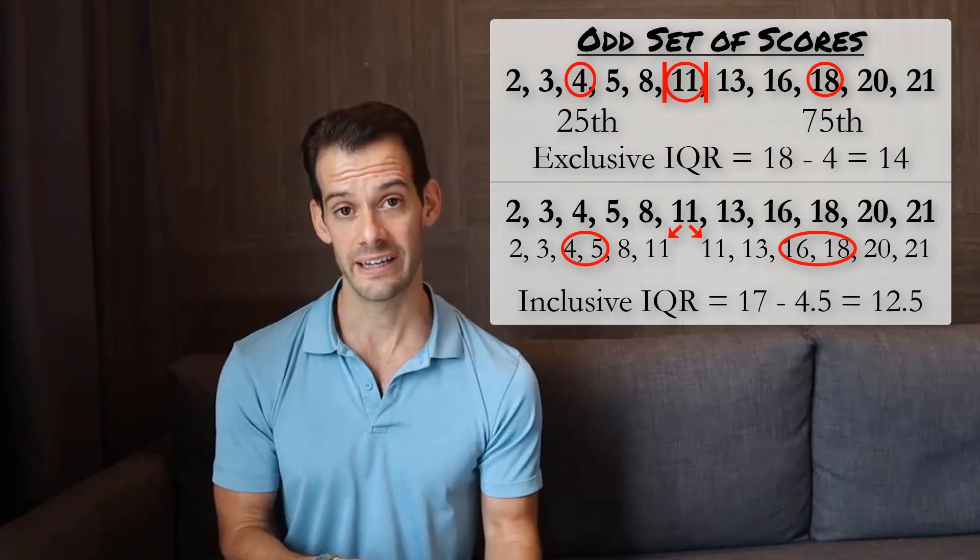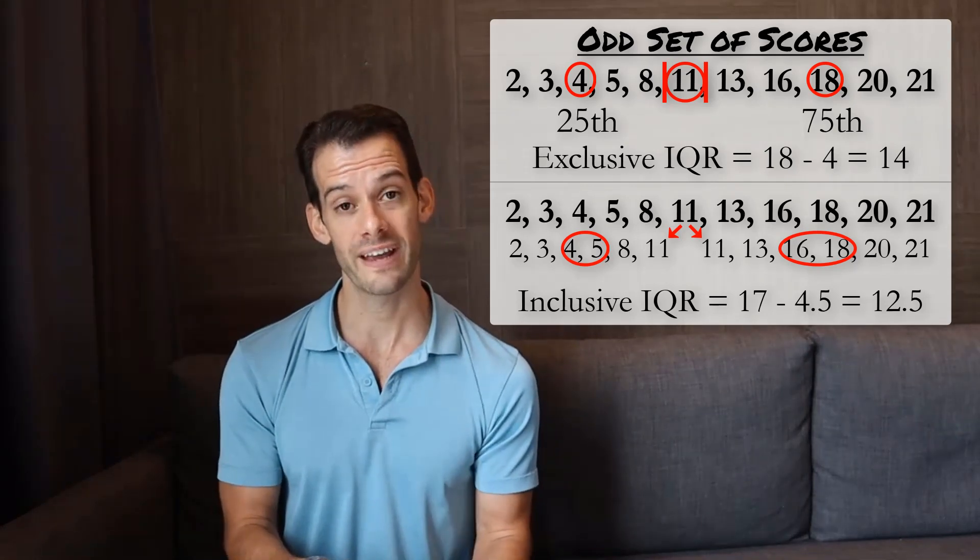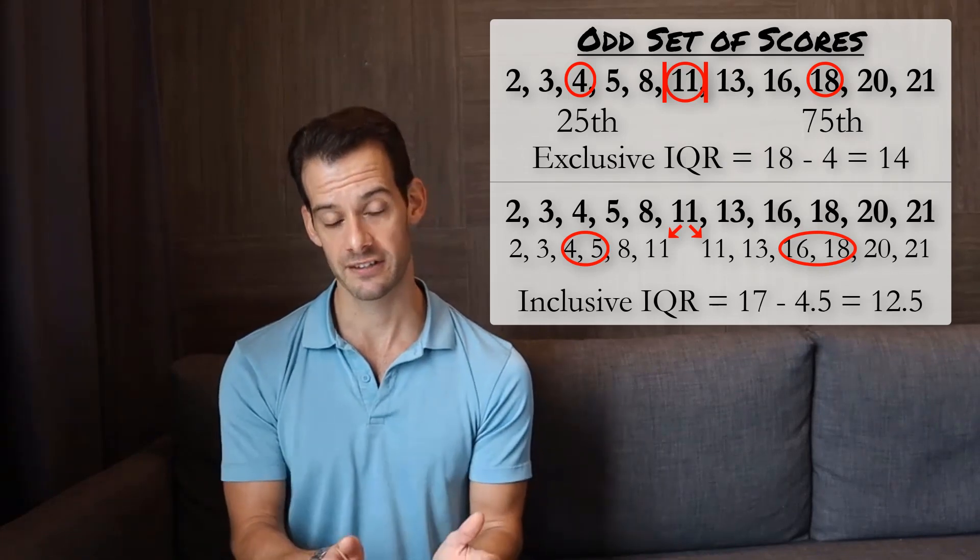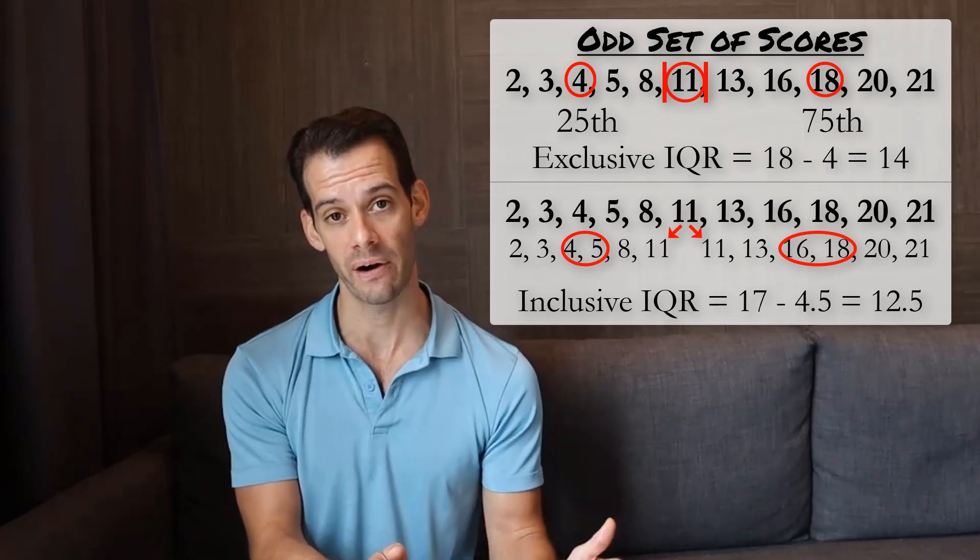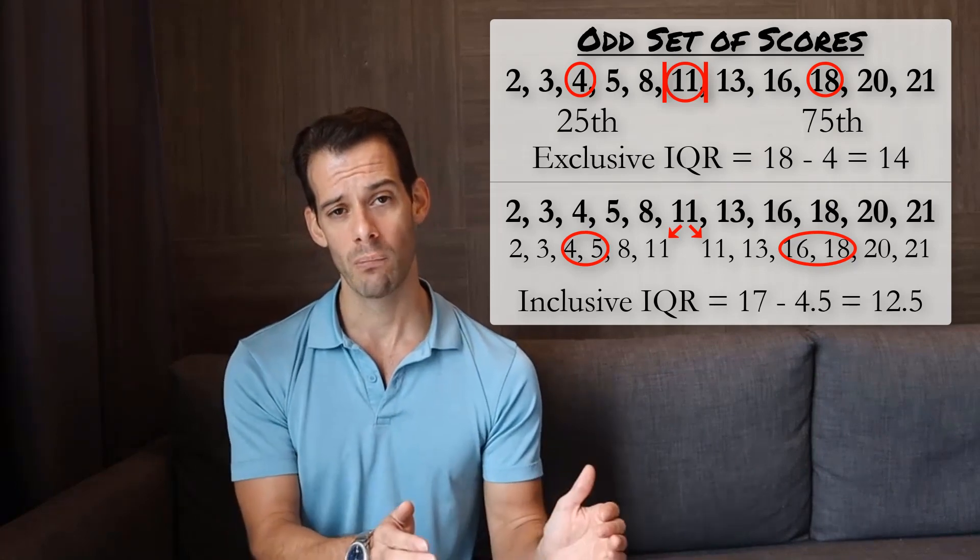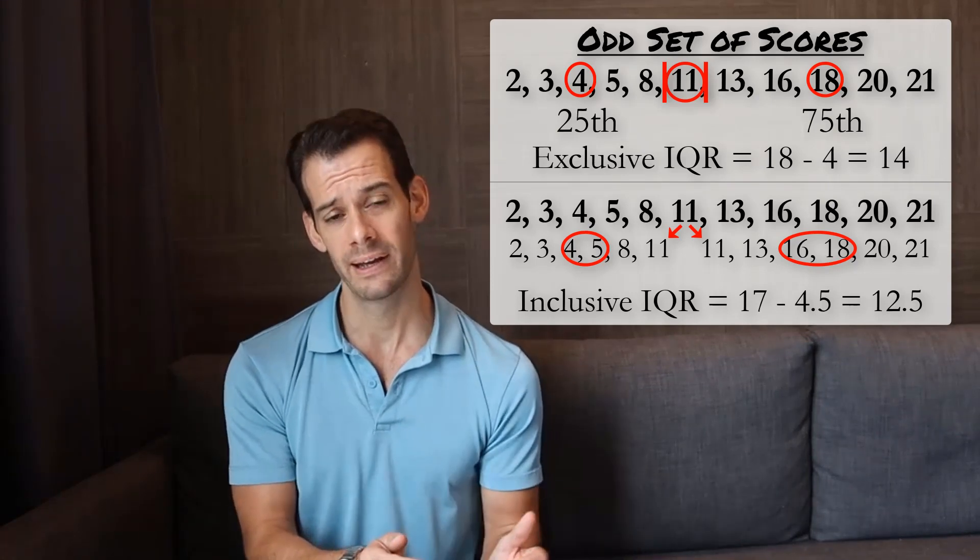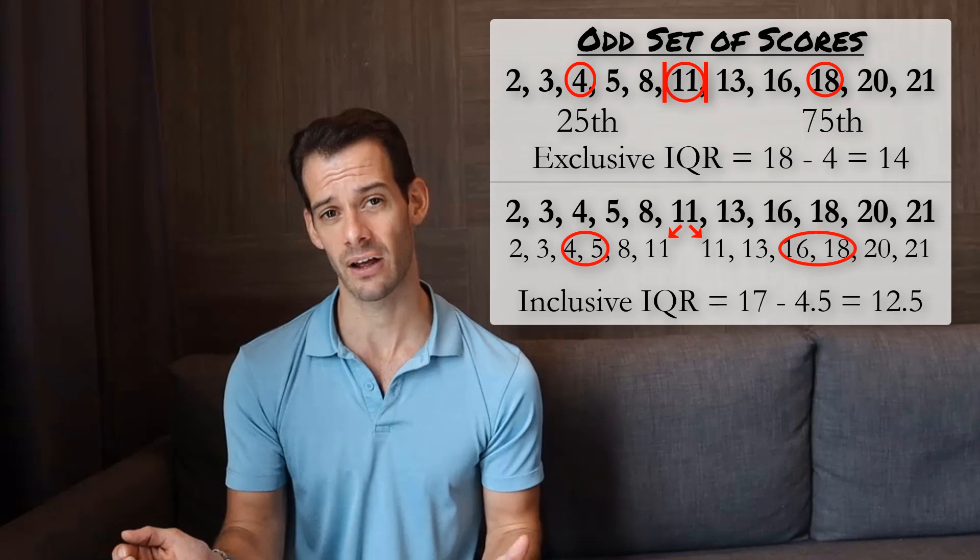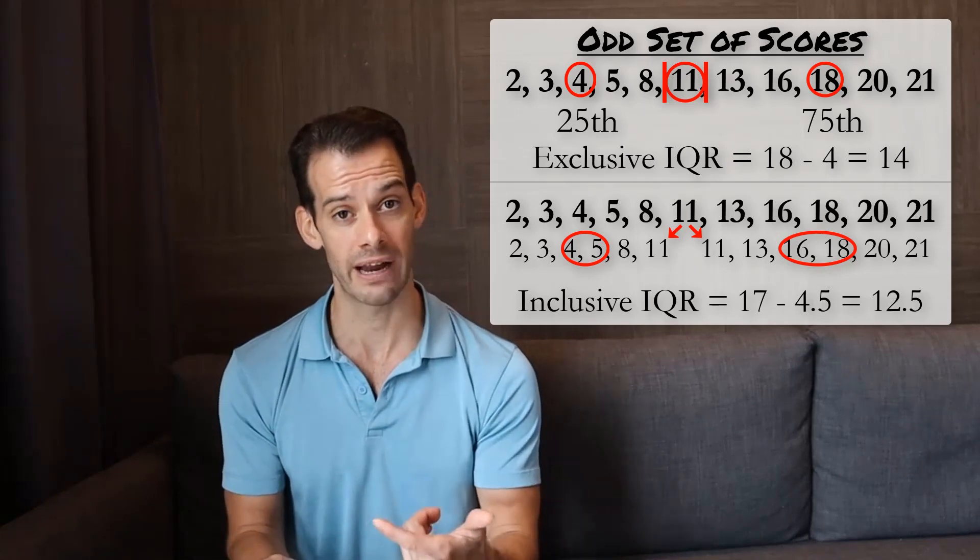As we can now see, if we use this inclusive method we'll tend to get a slightly smaller interquartile range. This is because by including the median as part of the lower and upper halves, we're moving the 25th percentile up and we're pulling the 75th percentile down. So we're looking at a narrower range of our data.